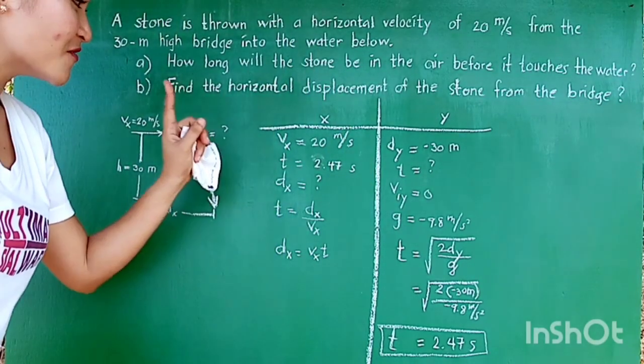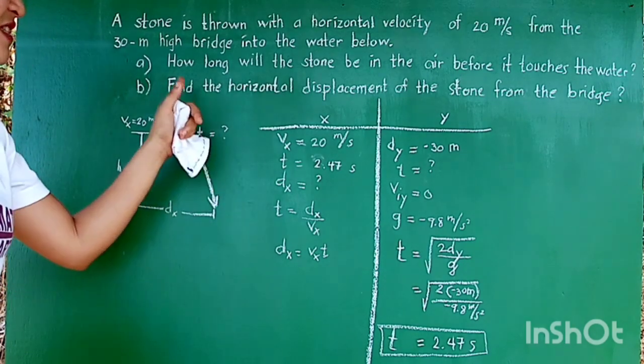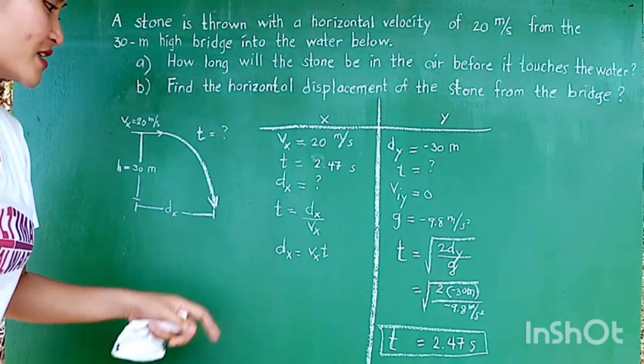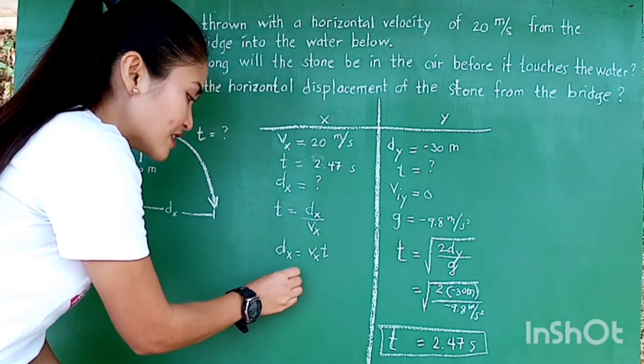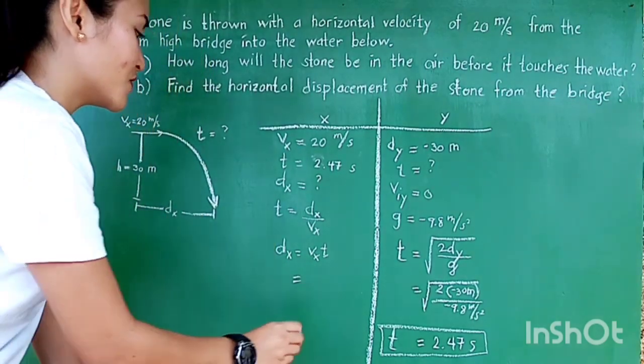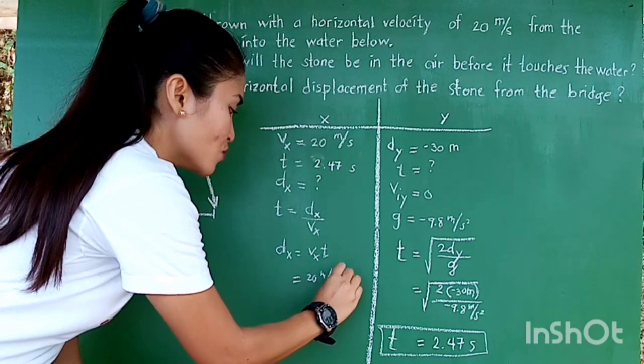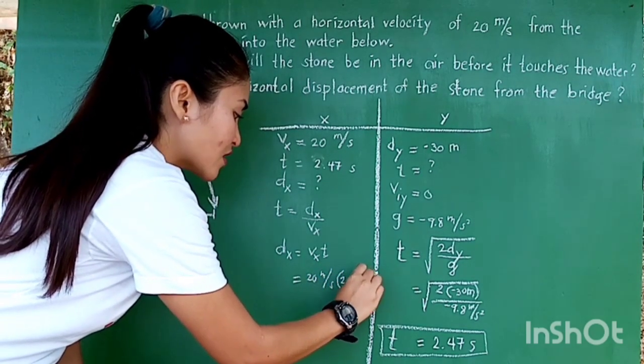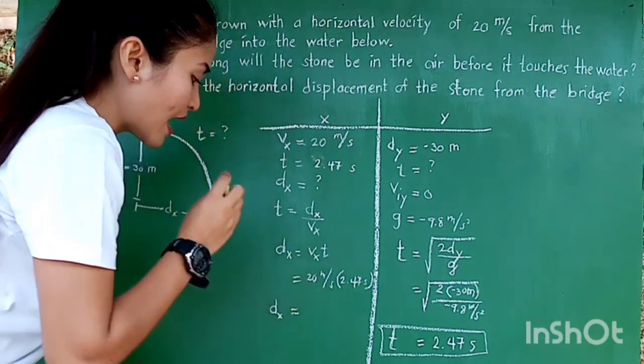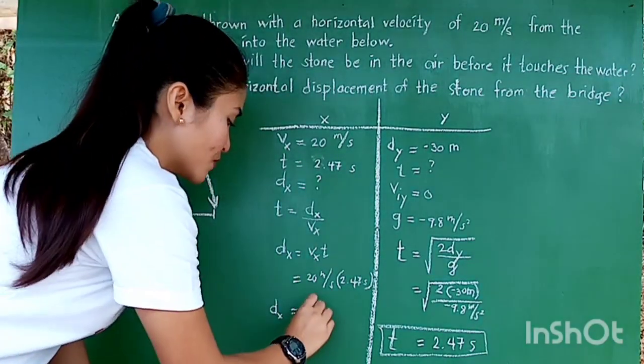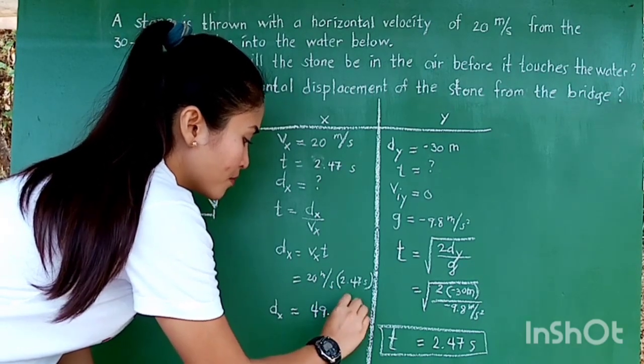Alright. Now that we have the value for T in the X component, can we now solve for the value of DX? Yes, of course. DX equals VX times T. Given the VX and given the T, we can directly substitute the values. So VX is equal to 20 meters per second. T is 2.47 seconds. Therefore, our DX is equal to 49.4 meters.